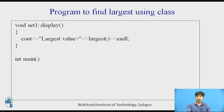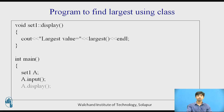Then the main function, from where the actual execution of the program starts: int main. I will create an object — set1 a — meaning a is an object and an instance of the class set1. Then I call a.input, then a.display, then return 0. When I say a.input, I will put the values 2 and 3. Is 2 greater than or equal to 3? No, it's false. So 3 will be the output displayed on the screen.